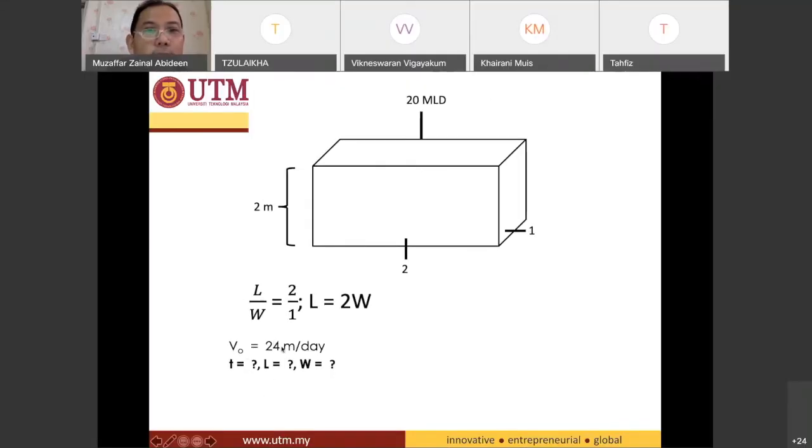H divided by time. So V0 is already there. We have already got our H. So it's very easy to find our t then.